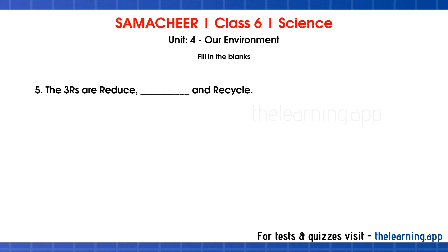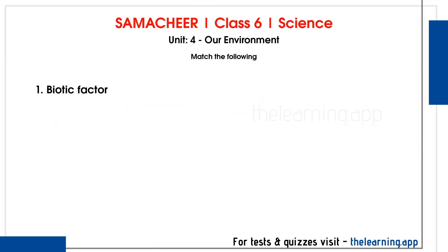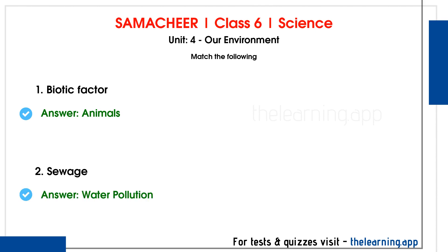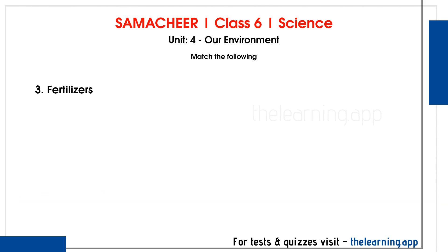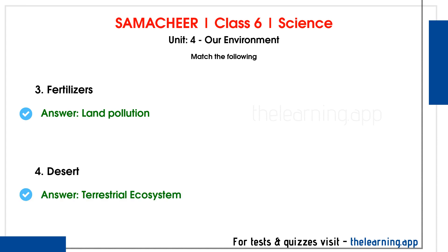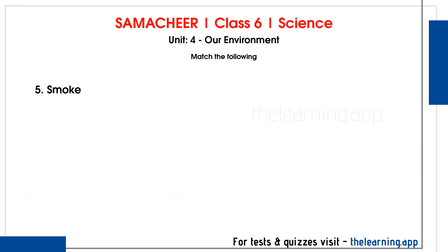The three R's are reduce, reuse, and recycle. Next, match the following. First: biotic factor — correct answer is animal. Second: sewage — correct answer is water pollution. Third: fertilizers — correct answer is land pollution.